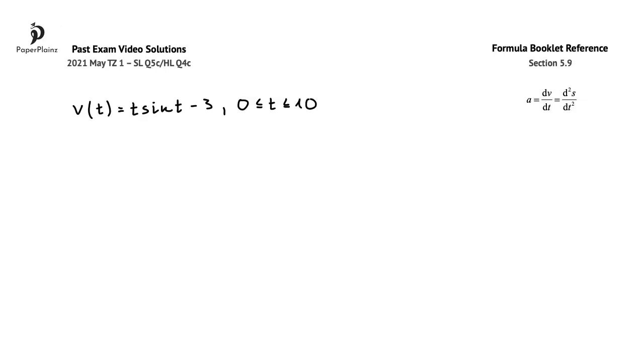In this question part we have to find the acceleration of the particle at t equals 7. This formula from section 5.9 of the formula booklet shows us that a is equal to dv/dt, which means that the acceleration function is the derivative of the velocity function.